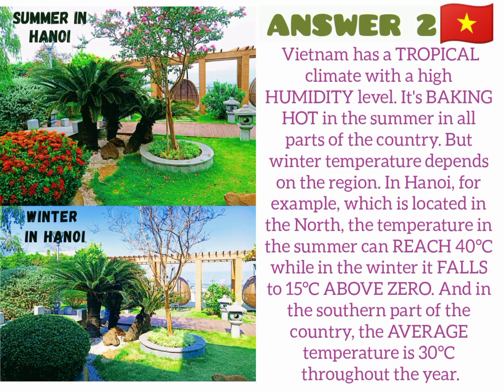Vietnam has a tropical climate with a high humidity level. It's baking hot in the summer in all parts of the country, but winter temperature depends on the region. In Hanoi, for example, which is located in the north, the temperature in the summer can reach 40 degrees Celsius, while in the winter it falls to 15 degrees above zero. In the southern part of the country the average temperature is 30 degrees throughout the year.